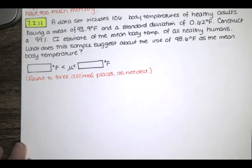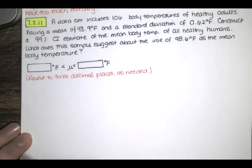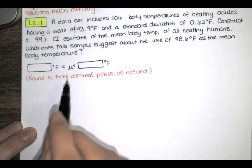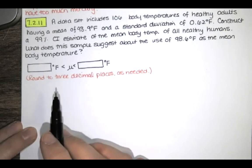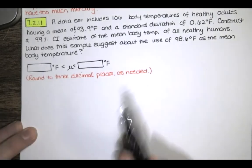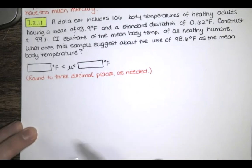We're told to round to three decimal places as needed. Now we know that whenever we are calculating a confidence interval for our sample mean and we don't know the population standard deviation, which is pretty typical,